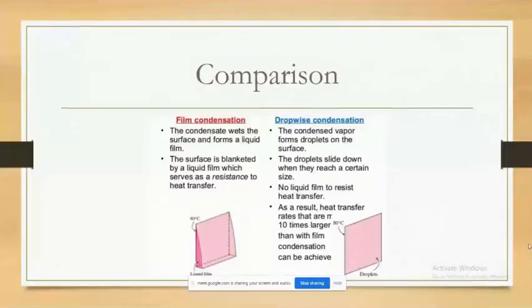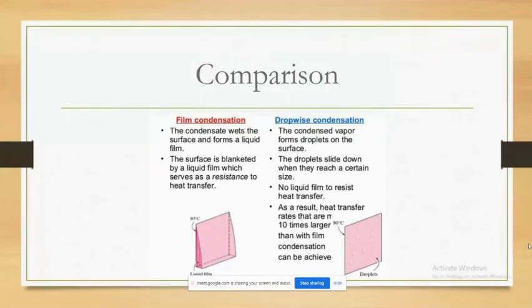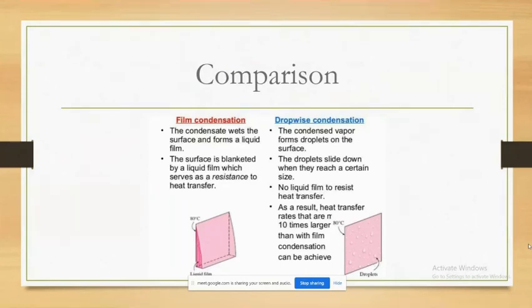Comparison of film condensation and drop-wise condensation: In film condensation, the condensate covers the surface and forms a liquid film; the surface is blanketed by the liquid film which serves as resistance to heat transfer. In drop-wise condensation, the condensed vapor forms droplets on the surface; the droplets slide down when they reach a certain size, leaving no liquid film to resist heat transfer. As a result, heat transfer rates five times larger than film condensation can be achieved.